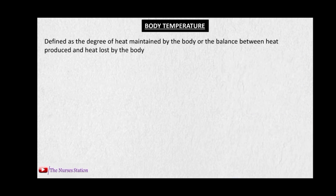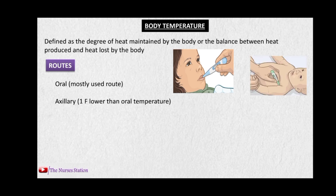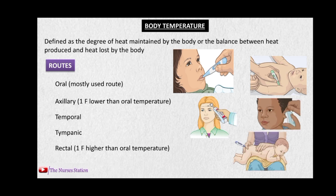Starting with body temperature. Body temperature is defined as the degree of heat maintained by the body, or the balance between heat produced and heat lost. There are various routes for assessment: the oral route, which is most commonly used, and the axillary route, where temperature is 1 degree Fahrenheit lower than oral. The route must be documented when recording the temperature.